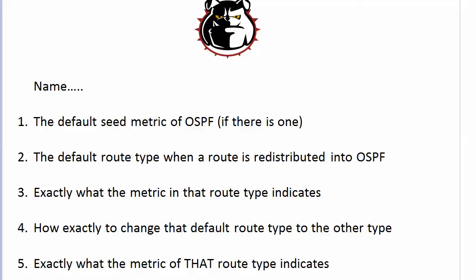Third, tell me exactly what the metric in that particular route type indicates. Fourth, how exactly to change that default route type to the other type. And fifth, exactly what the metric of that route type indicates. So kind of five quick quiz questions here in one.